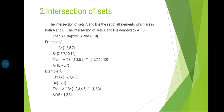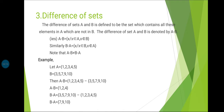Example 2: Let A = {1, 2, 3, 4, 5} and B = {1, 2, 3}. Then A intersection B = {1, 2, 3}.